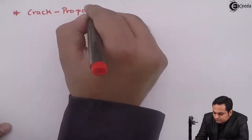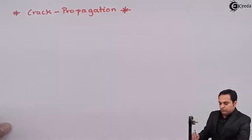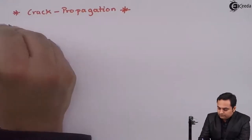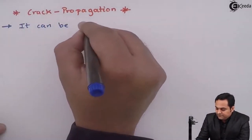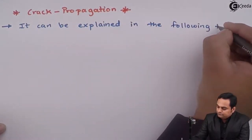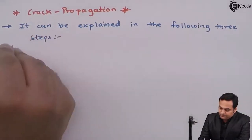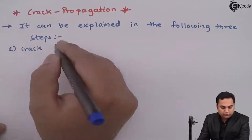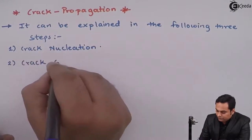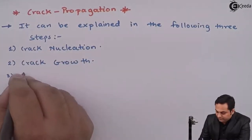Hello friends, in this video we will see what is meant by crack propagation. Crack propagation can be explained in the following three steps: the first one is crack nucleation, next is crack growth, and at last we have fracture.